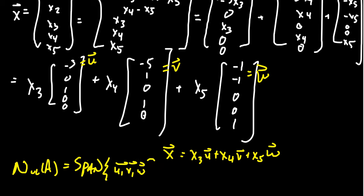And that agrees with what we said earlier — the nullity of the matrix is how many free variables are in the system. We counted three, and therefore we should be able to span it using three independent vectors. And we have, in fact, our three vectors. But how do we know they're independent?